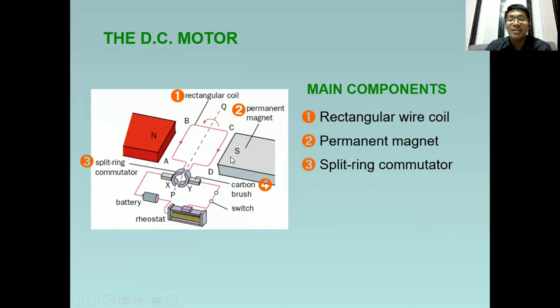Third, the split ring commutator, which is this one here. And lastly, the carbon brushes. We have two carbon brushes, which are directly connected to the split ring commutator.